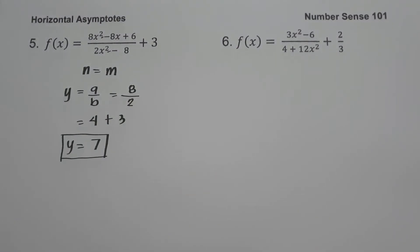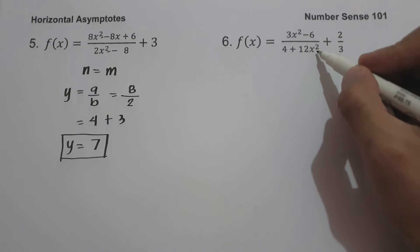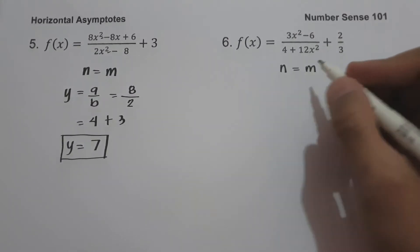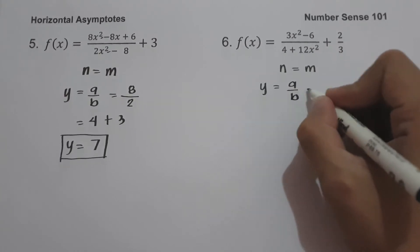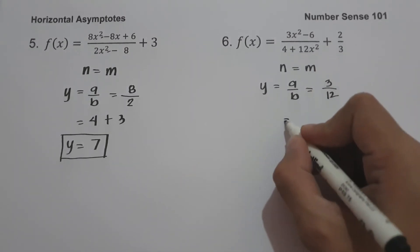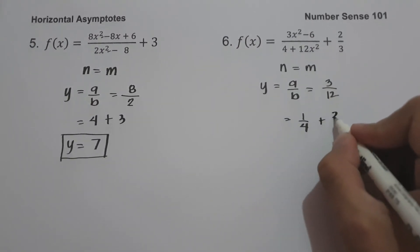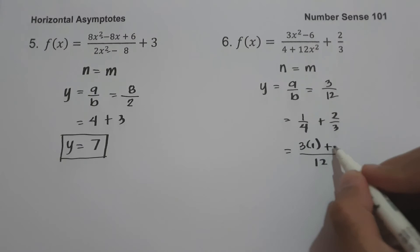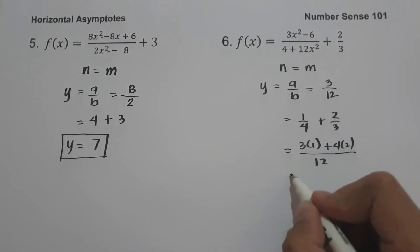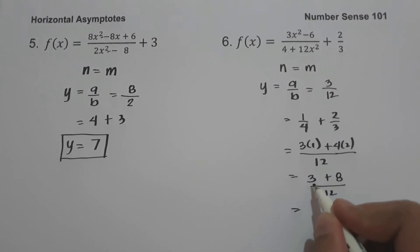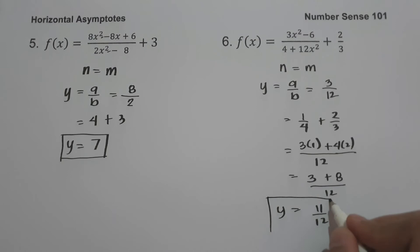On example number six, we have f(x) equals 3x squared minus 6, all over 4 plus 12x squared, plus 2/3. Since the degree of the numerator equals the degree of the denominator, we have n equals m, so our horizontal asymptote is a over b. Here a equals 3 and b equals 12, giving 3 over 12, which simplifies to 1/4. Adding 2/3: using LCM of 12, we get 3/12 plus 8/12 equals 11/12. So our horizontal asymptote is y equals 11/12.